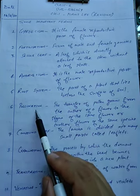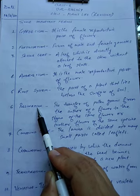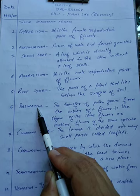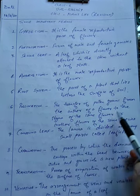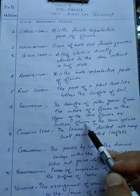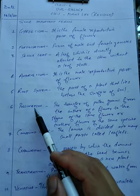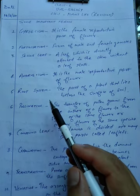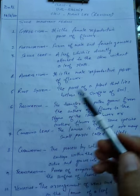The sixth important term is pollination. Pollination is a very important process in the reproduction of plants. It is the transfer of pollen grains from the anther of a flower to the stigma of the same flower or another flower of the same species. So in pollination, the pollen grains are being transferred from the male part to the female part.